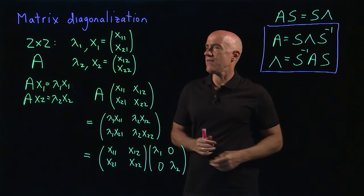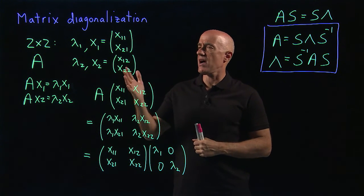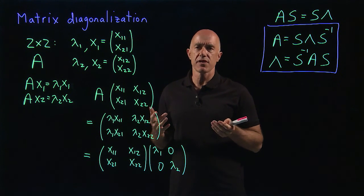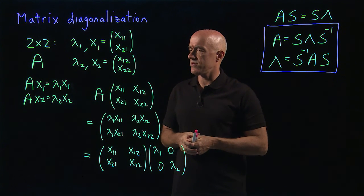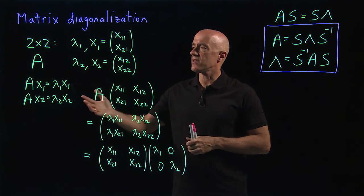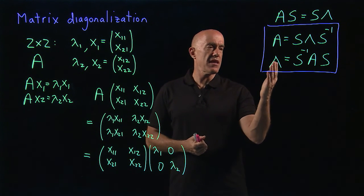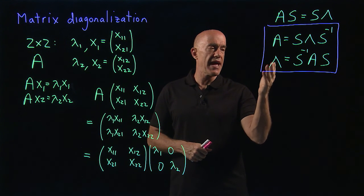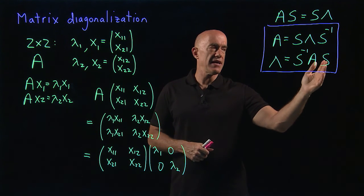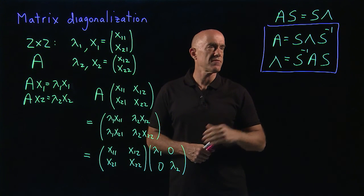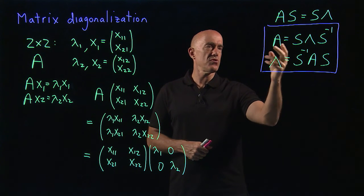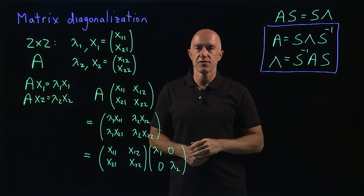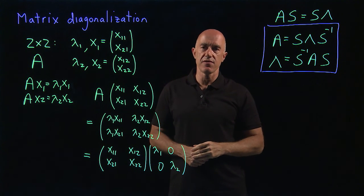So what have we done? I've shown you that if you can find a complete set of eigenvectors for a matrix — an n by n matrix with n linearly independent eigenvectors — then you can diagonalize that matrix. You can get a diagonal matrix lambda with eigenvalues along the diagonal by writing S inverse A S, where S is the matrix of eigenvectors. Or you can factor A as S lambda S inverse. We'll make use of this in later videos.